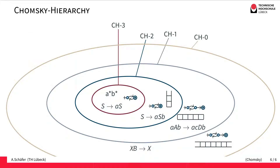So we have started with a general grammar and imposed more and more restrictions on the productions, finally arriving at this hierarchy. However, this is not only a hierarchy on the grammars but also on the languages, and therefore also on the equivalent automata models. For example, using this hierarchy we immediately see that for every finite automaton — which corresponds to a Chomsky three language — there must be a pushdown automaton accepting the same language, and also a linear bounded automaton or a general Turing machine. However, the other way around is not possible: there will be languages accepted by Turing machines but not by pushdown automata, which correspond to Chomsky two languages.